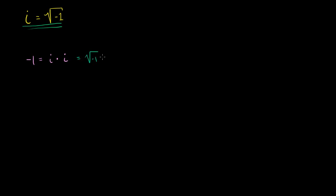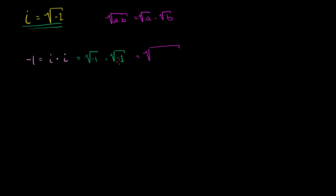So then this would be the same thing as the square root of negative 1 times the square root of negative 1. And then from the properties of the principal square root function, the square root of a times b is the same thing as the principal square root of a times the principal square root of b. So they'll say this is the same thing as the square root of negative 1 times negative 1.